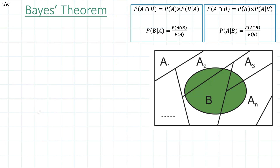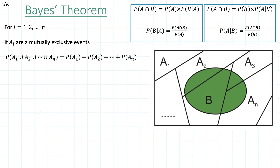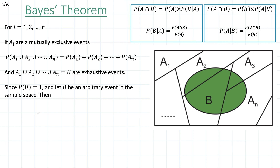Now, what happens when we extend it to three events? Imagine you have a set with many events happening. It's not just two circles — you have many events, and they're all mutually exclusive, so they don't intersect each other. For i from 1 to N, you have all these events. They're mutually exclusive, so if you take their union, they add up to 1. These are all important facts for us to prove Bayes' theorem for infinitely many events. Let B be an arbitrary event in the sample space.